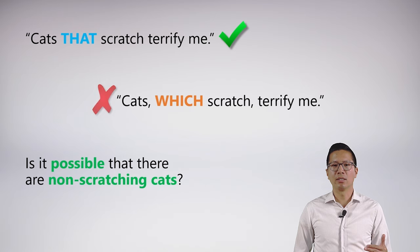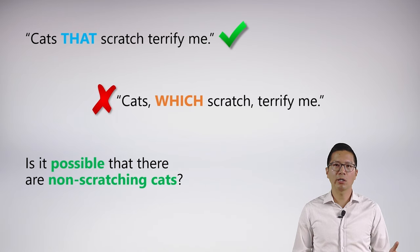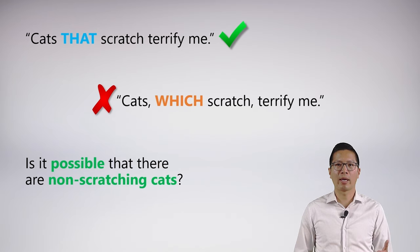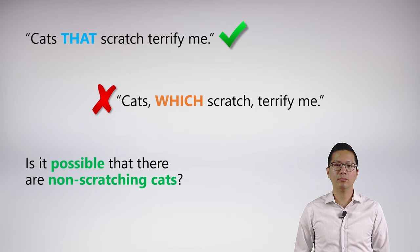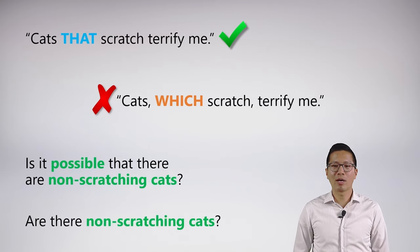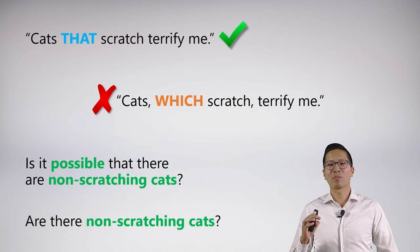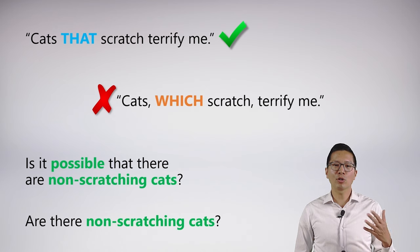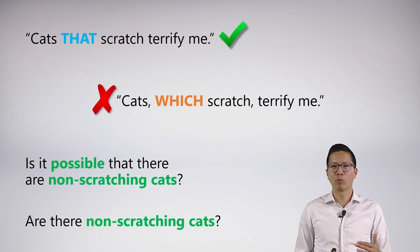But the second sentence denies this. Is it possible for non-scratching cats to exist if I say 'cats which scratch terrify me'? The answer is no. I'm actually asserting something about all cats, and all cats actually scratch. Now there is a philosophical question we could follow up with. You might think that in the first case it would imply that there are non-scratching cats, and in the second there aren't — but in fact that's not quite right.